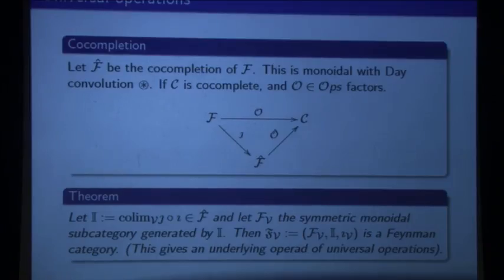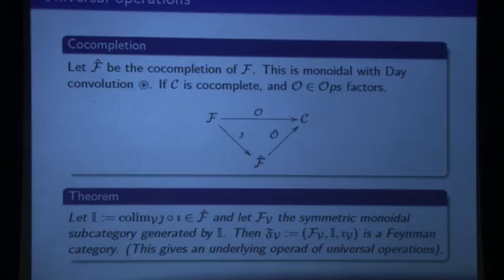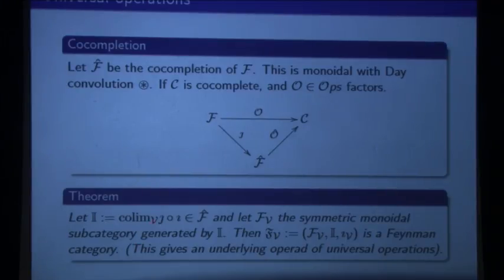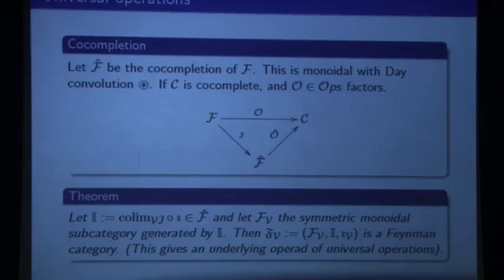I take one element — I'll build a Feynman category again with a trivial V — and take the co-limit over V of my inclusion functor I, with J going to the co-limit. Then there's a theorem: if I take the symmetric monoidal subcategory generated by I in this co-completion, that's a Feynman category. It's complete general nonsense; the theorem isn't that easy to prove. Let's see what this does for us.